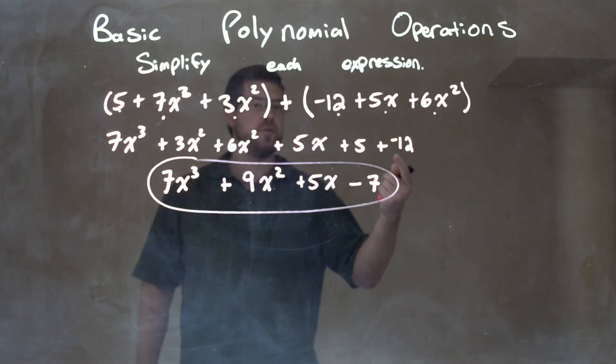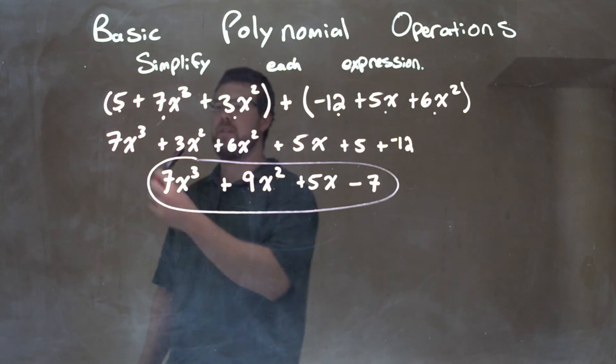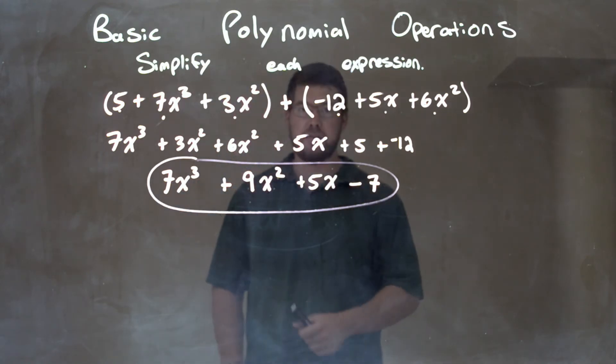So what we want to do, we looked inside each parentheses. Can it simplify? No. Then I brought all my highest degree first and counted down. So the third power, then the second power, then the first power, then our constants. Then from there, I combined our like terms to get our final answer: 7x to the third plus 9x squared plus 5x minus 7.